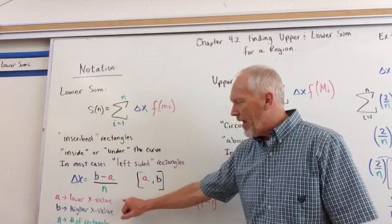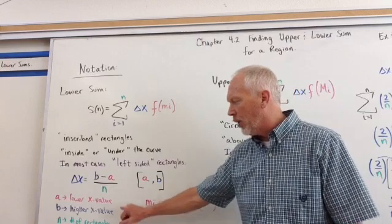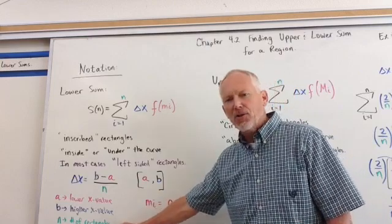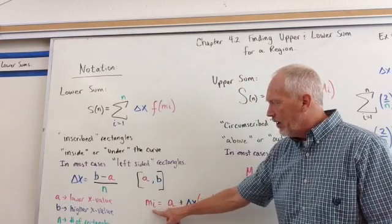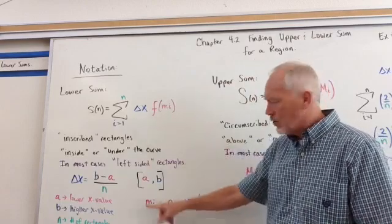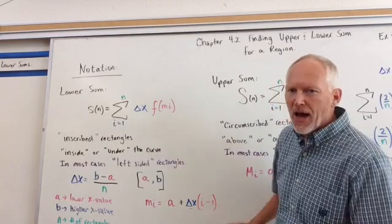Where a is your lower x value, your b is your upper x value, your upper bound, lower bound, upper bound, n is your number of rectangles, and then we have little m sub i that's going into the function will be a plus your change in x times i minus 1.